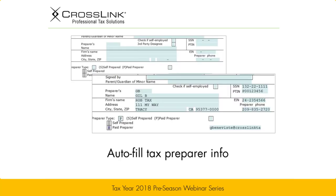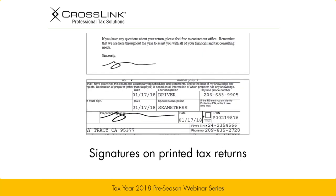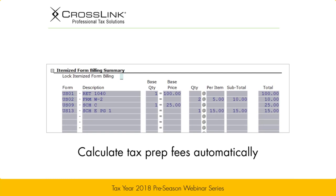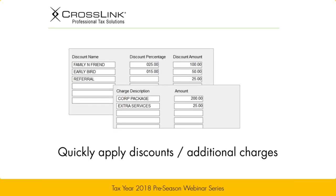Some examples of this include having preparer info and billing info automatically appear in your tax returns, having your tax preparer signature automatically appear in printed tax returns and PDFs, having tax prep fees automatically calculated based on the forms being used, and being able to quickly apply a discount or an additional custom charge. That's precisely what we'll be reviewing today.